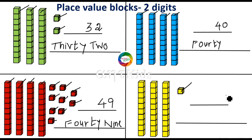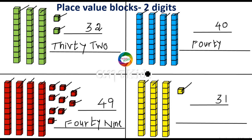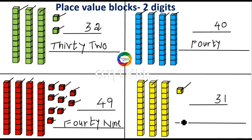And here only one one-block is there, so you have to write one in the ones place. And how many tens blocks are there? Three tens blocks, so in the tens place you have to write three. This represents the number 31 — T-H-I-R-T-Y, 30, O-N-E — 31.